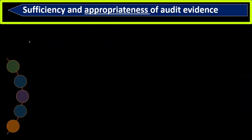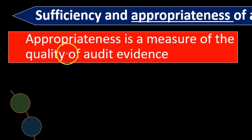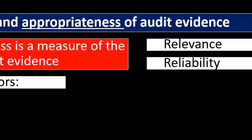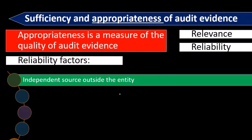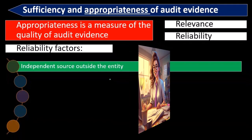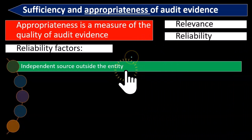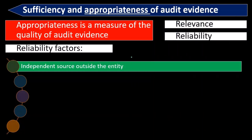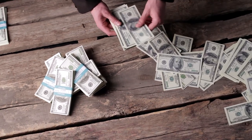Appropriateness is a measure of the quality of audit evidence. Relevance and reliability are the key factors. Reliability factors include independent sources outside the entity — evidence corroborated by someone outside the entity is more valuable because it isn't internally influenced, similar to how a detective would give higher value to a third-party opinion than to statements from someone directly involved.